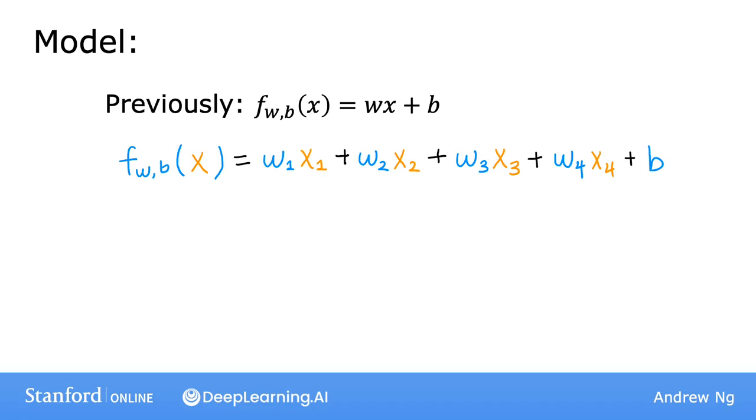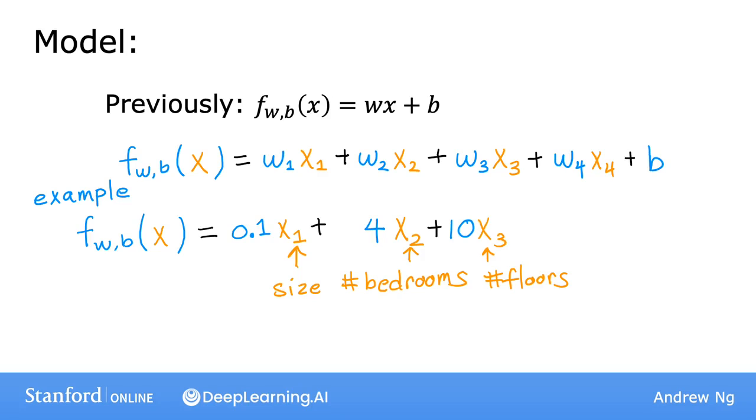Concretely, for housing price prediction, one possible model may estimate the price of the house as 0.1 times x1, the size of the house, plus 4 times x2, the number of bedrooms, plus 10 times x3, the number of floors, minus 2 times x4, the age of the house in years, plus 80.